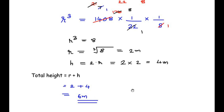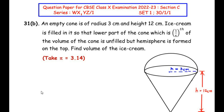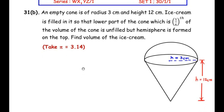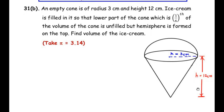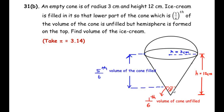Now let us move on to the 31b question, also from the surface areas and volumes chapter. An empty cone has radius 3 cm and height 12 cm. Ice cream is filled so that the lower 1/6 of the cone's volume is unfilled, but a hemisphere is formed on top. If 1/6 is unfilled, then 5/6 of the cone is filled with ice cream.